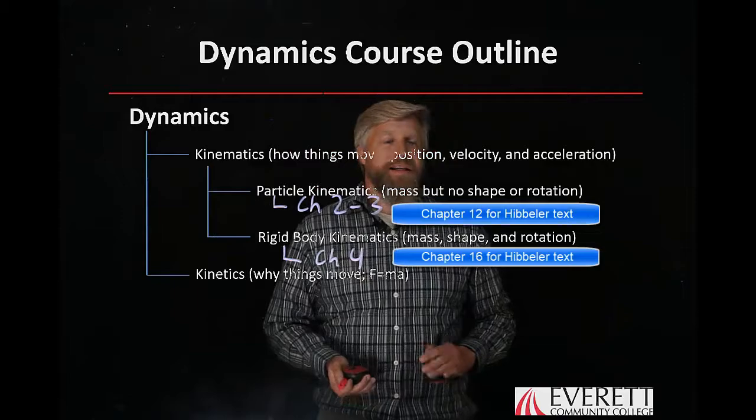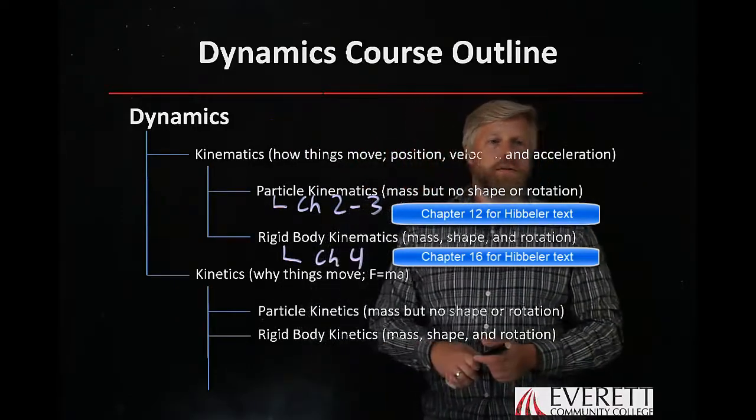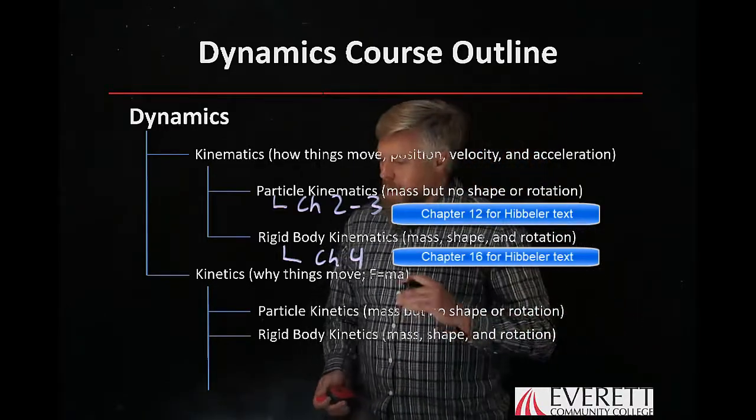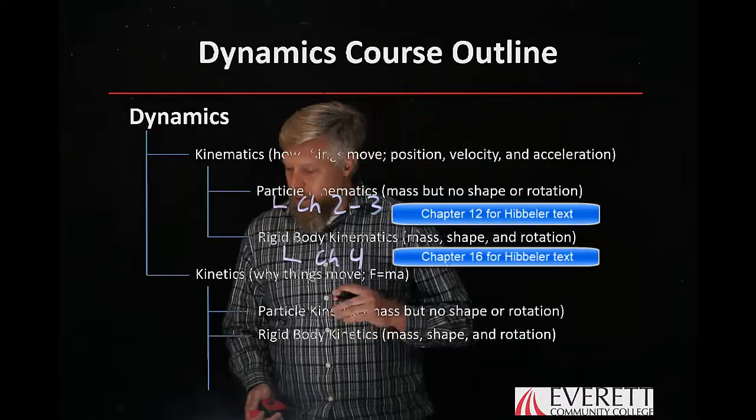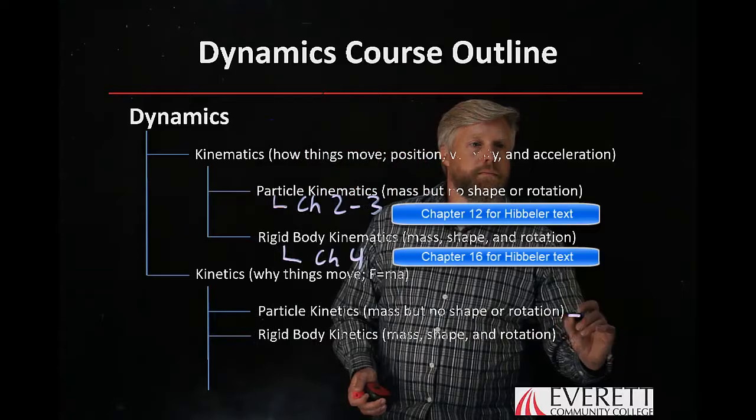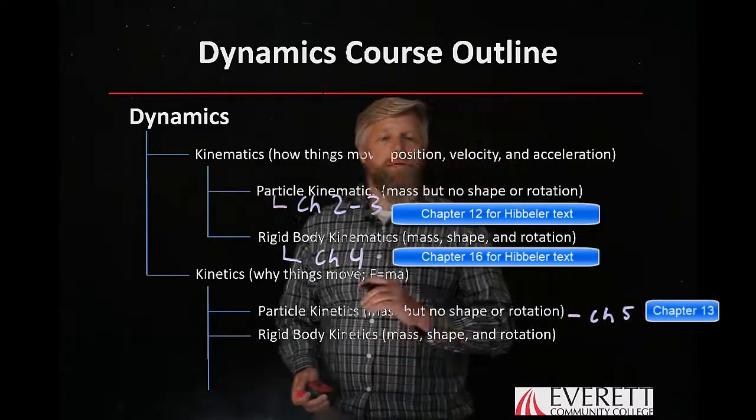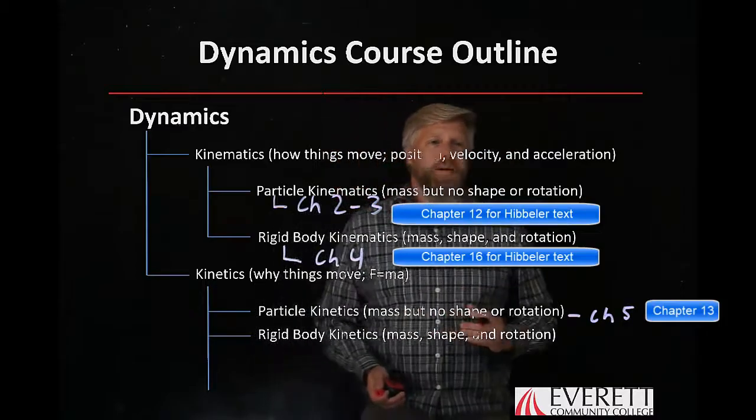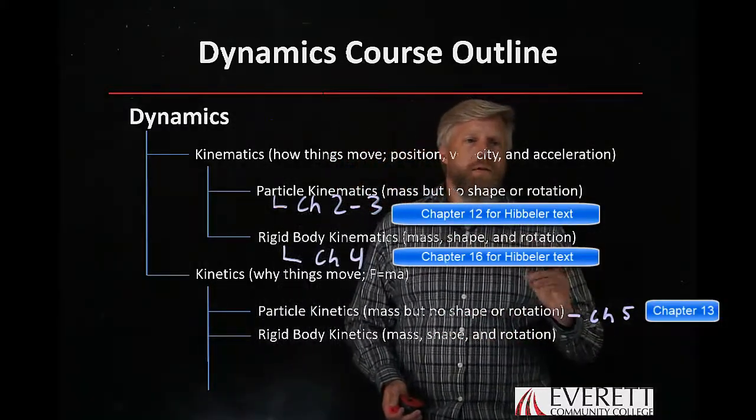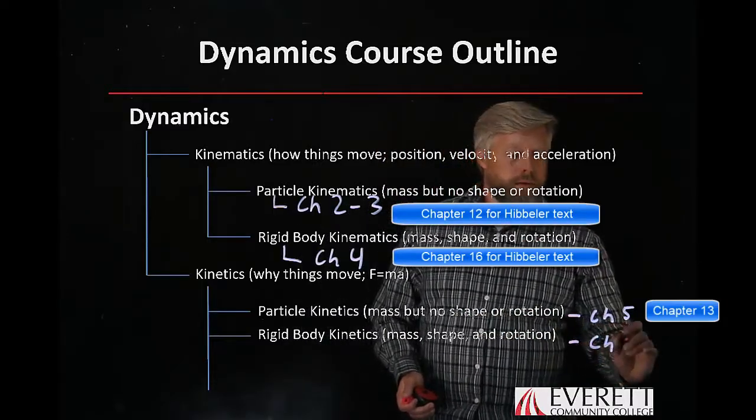From there we move on to kinetics. Now kinetics can be broken up into several different categories as well. First we're going to do the same thing we did in kinematics. We're going to start with a particle assumption. In kinetics, our particle assumption is going to be chapter 5. Then we move on to rigid body. We take away the training wheels, we take away that assumption that everything has no shape or rotation, and we move to rigid body kinetics, which for us is going to be chapter 6.